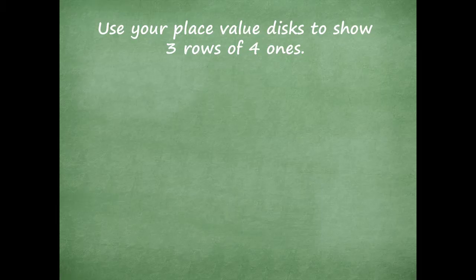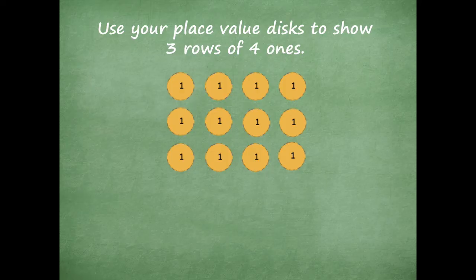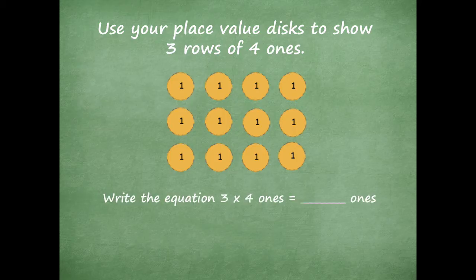Now use your place value disk to show three rows of four ones. There's my three rows of four ones — here's my first row with four ones, my second row with four ones, and my third row with four ones. Does yours look like mine? If not, go ahead and pause the video and make yours match before we continue. The equation is three times four ones equals how many ones? Twelve ones. Great job!